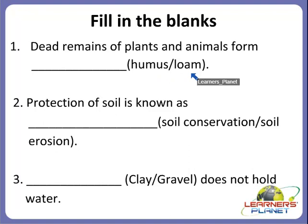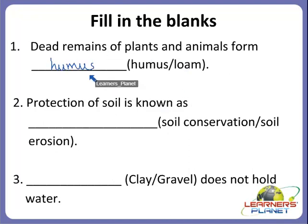Yes, children. Dead remains of plants and animals — it is dark in color. It is the dark colored substance which is formed from the dead remains of plants and animals. Yes, it is called humus. The dark colored substance that is formed from the dead remains of plants and animals is called humus.